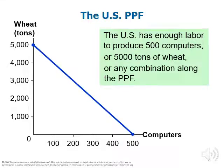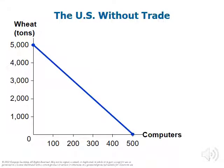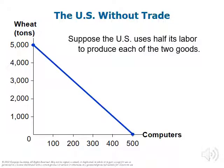Going through these steps helps us to draw the production possibilities frontier. We're assuming that the tradeoff is going to be linear — the slope will be constant throughout the entire PPF. If we suppose that the U.S. uses half of its labor hours to produce each good, 25,000 labor hours will be devoted to production of computers and 25,000 labor hours to the production of wheat. In this case, the U.S. will be able to produce 250 computers and 2,500 tons of wheat.